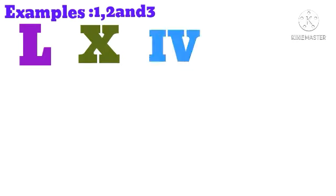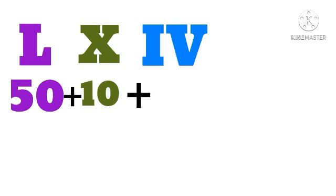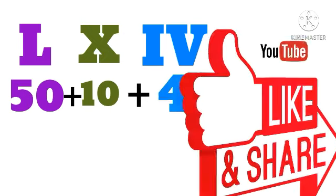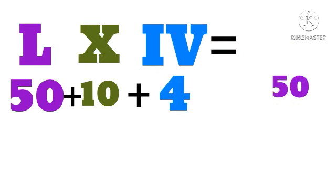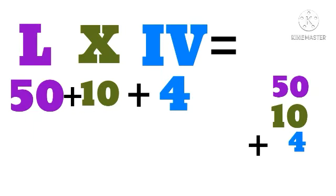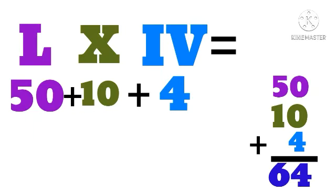LXIV: L means 50, X means 10, IV means 4. So 50 plus 10 plus 4, the answer is 64.